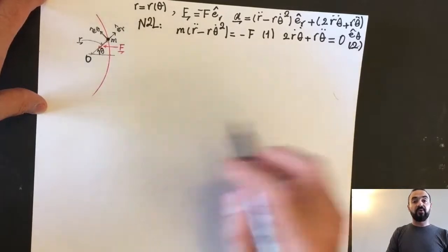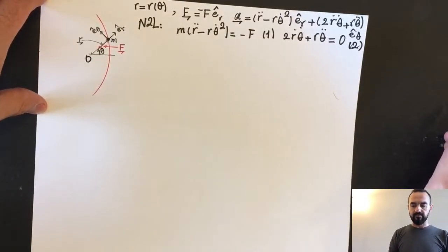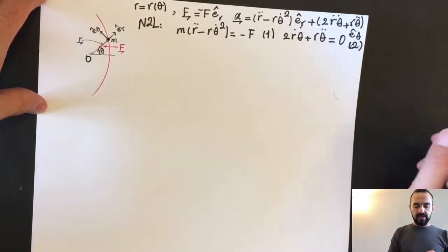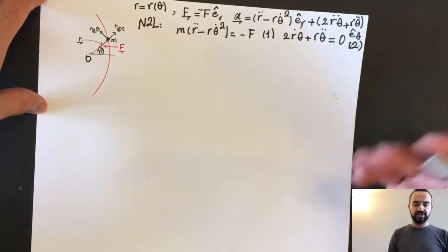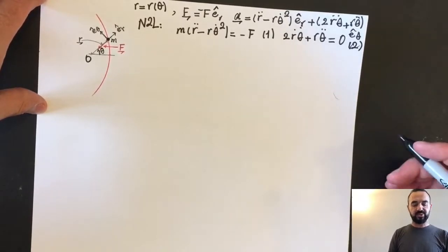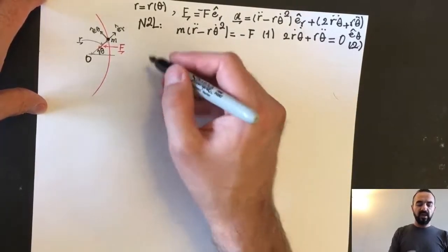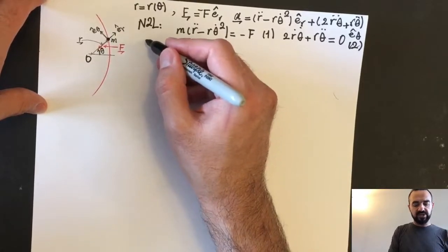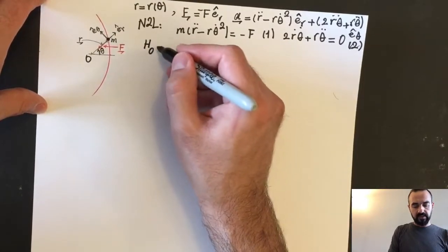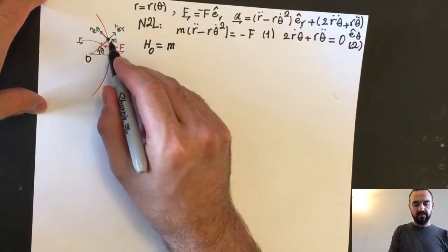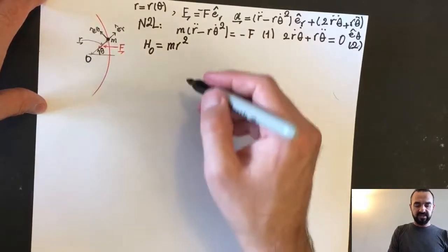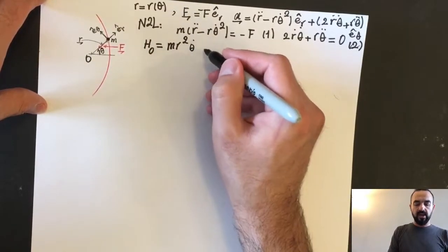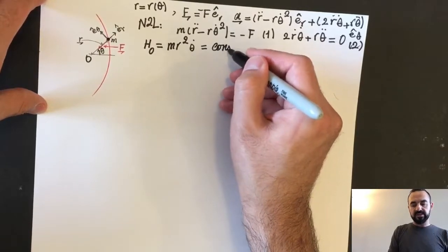We only have force in the radial direction. This is an application of central force, and we know that for any motion under central force, angular momentum is conserved. The angular momentum with respect to O is H_O equals M R-squared theta-dot, and it is constant — call this equation 3.